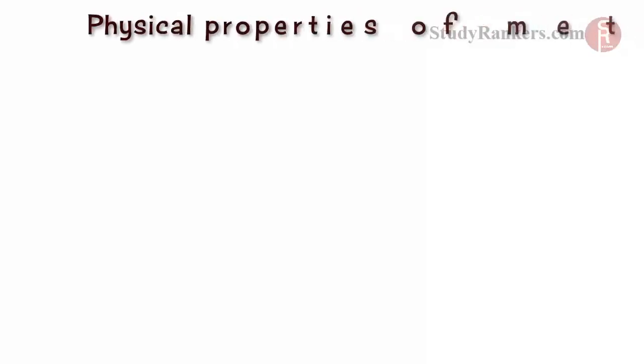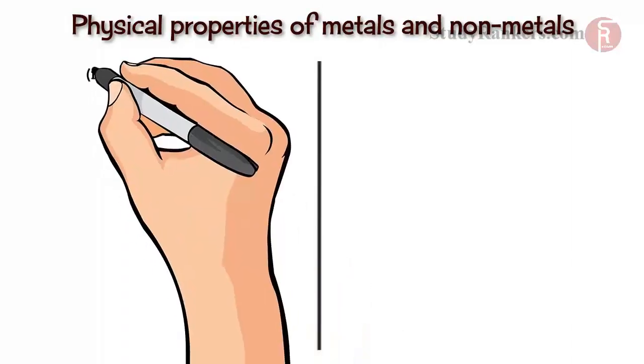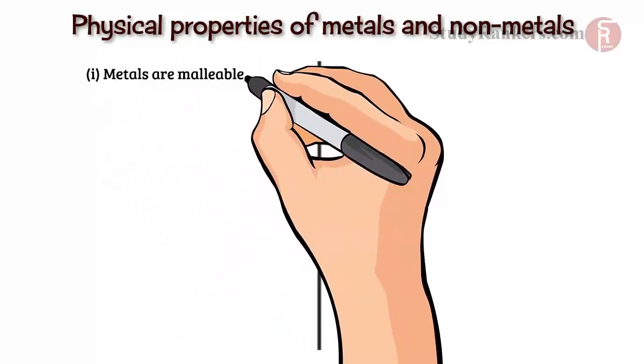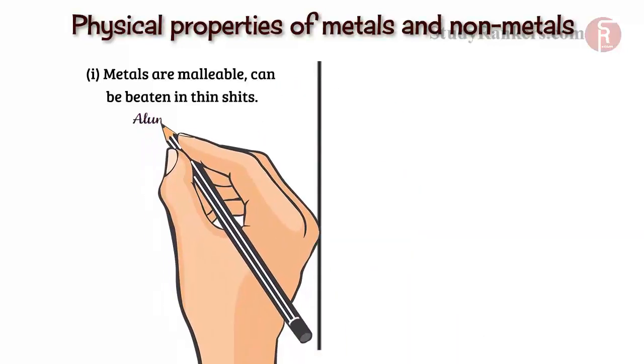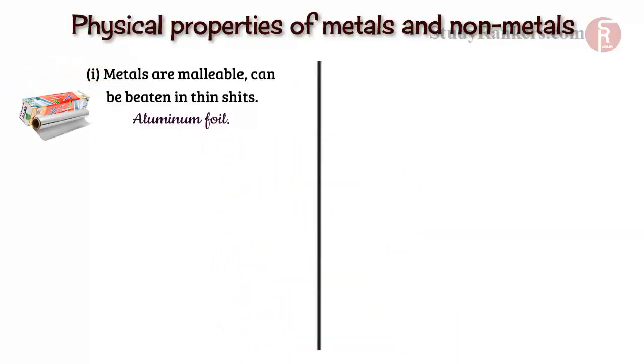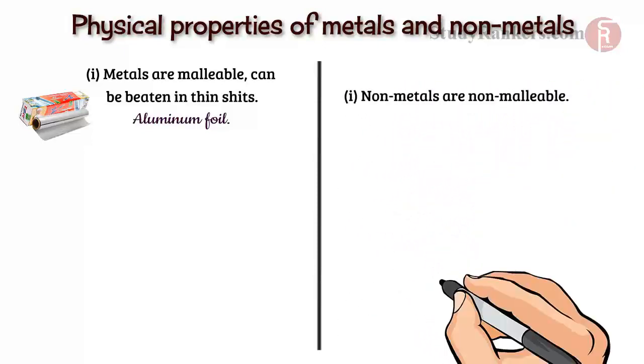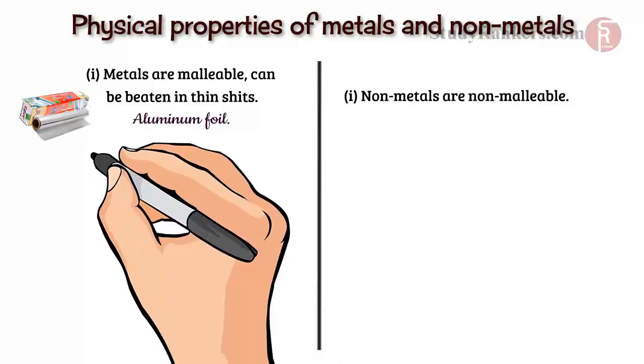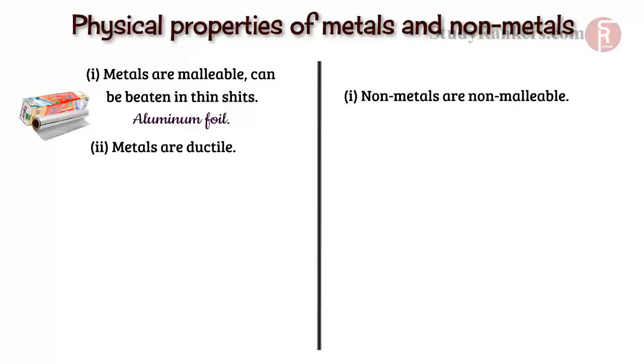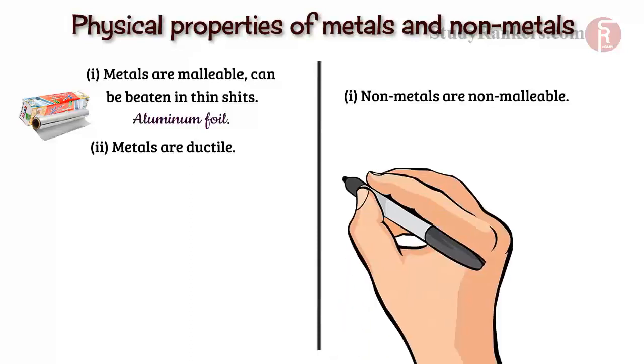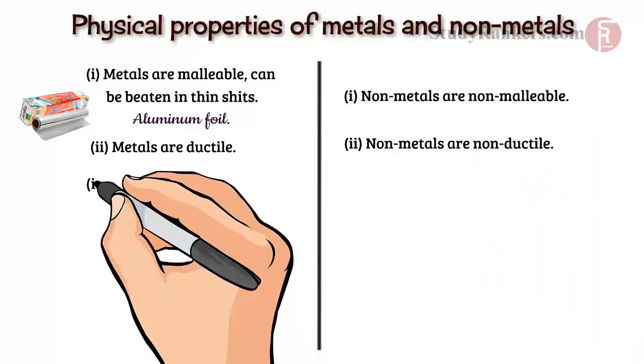Let's discuss some physical properties of metals and non-metals. Metals are malleable, which means they can be beaten into thin sheets. This example is aluminum foil we use for packaging of food. Non-metals are non-malleable. Metals are ductile, that means they can be drawn in the form of thin wire. We have seen metal wires all around us. Non-metals are non-ductile.